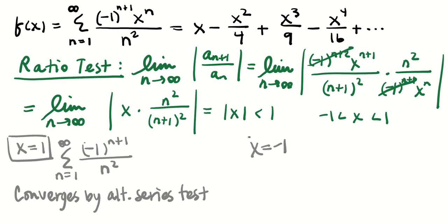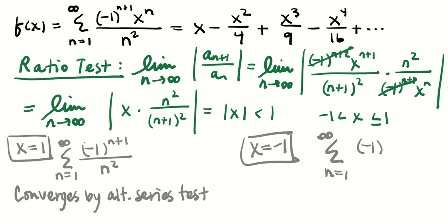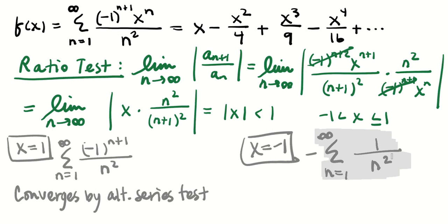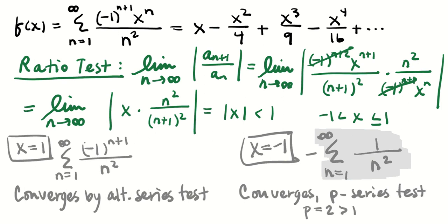Including x = 1 in the interval. At x = −1, the (−1)^(n+1) combines with (−1)^n to give (−1)^(2n+1), which is always −1 since 2n+1 is always odd. Factoring that out, the remaining series ∑1/n² converges by the p-series test with p = 2 > 1. So the full interval of convergence is [−1, 1], including both endpoints.